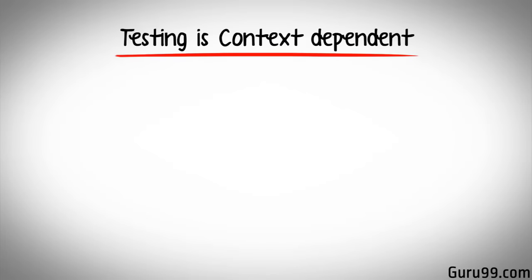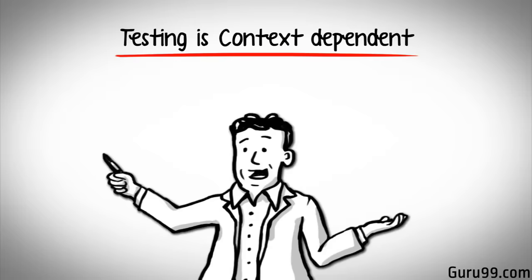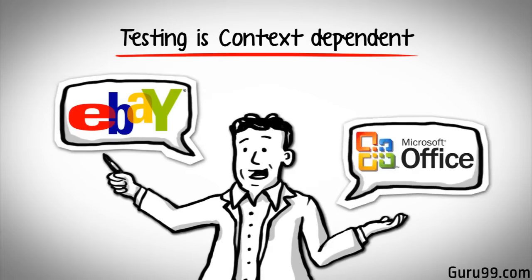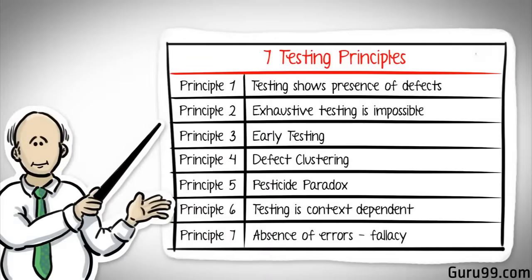The last principle of testing states that testing is context dependent, which basically means that the way you test an e-commerce site will be different from the way you test a commercial off-the-shelf application. Before we close this tutorial, here is a quick recap of the seven testing principles.